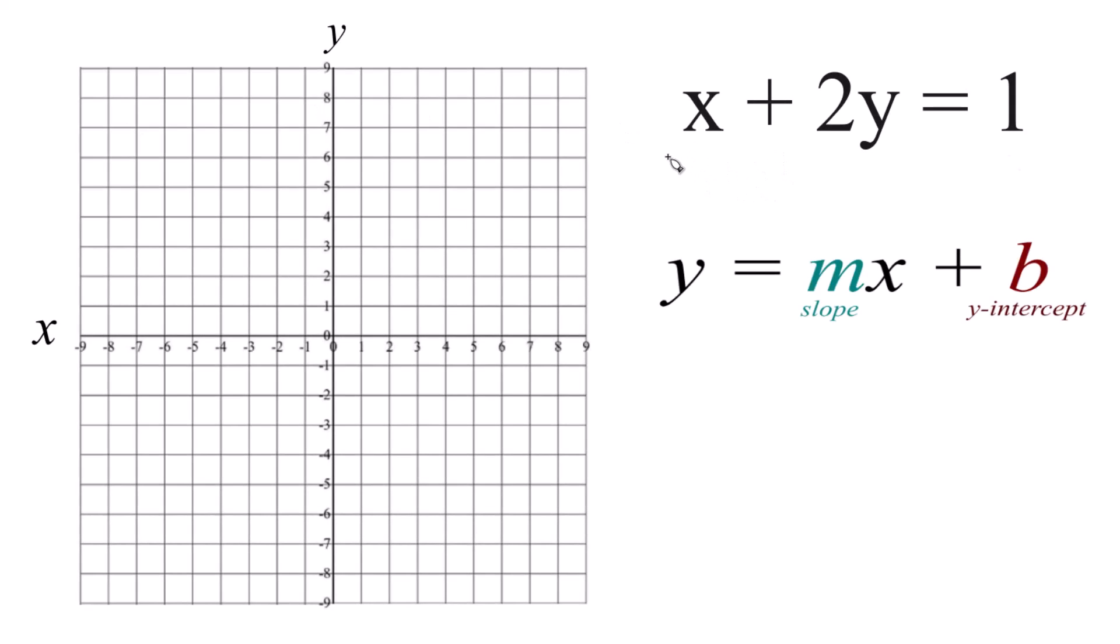Let's graph the equation x plus 2y equals 1. Here's how you do that. You could use a table of values and that would work, but here we're going to use slope-intercept form. It's a little bit easier with this type of equation.